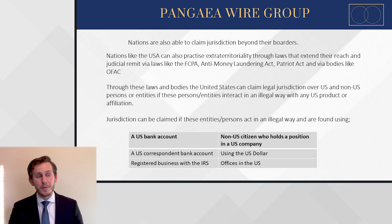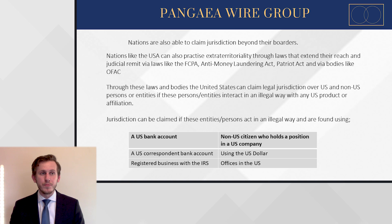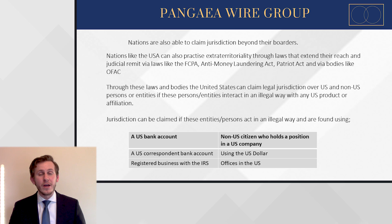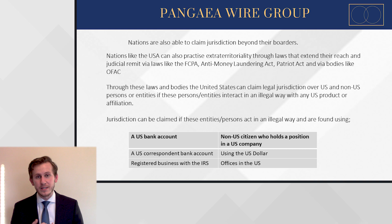Within these laws, a non-US person or entity can fall under US jurisdiction if they match certain criteria — for instance, if they have a US bank account, a correspondent bank account, if they use the US dollar, if they are registered with the IRS, if they are a non-US person with a position in a US company, or if they have US offices. These are just some of the ways a person or entity of non-US origin can be under the jurisdiction of the United States.